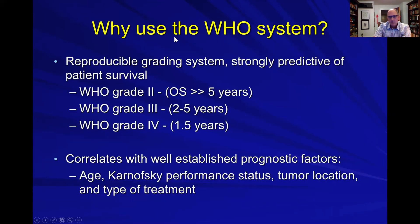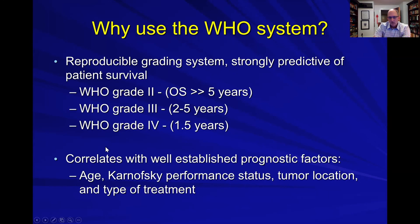So why use this WHO system? It's a very reproducible grading system and is strongly predictive of patient survival. As a rough rule of thumb, if you can place a glioma in the category of grade two, you can predict overall survival pretty well — likewise for the other grades. These grades correlate with established prognostic factors that have been validated for years, if not decades.